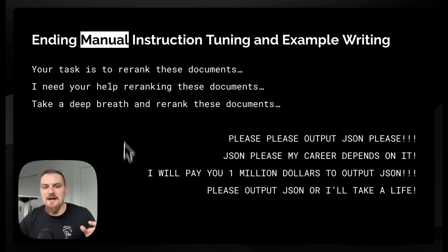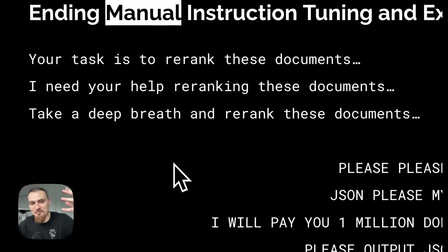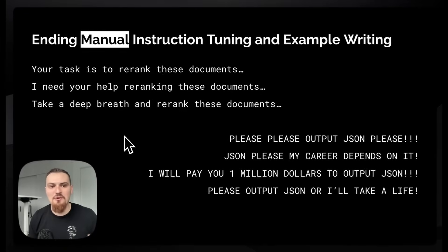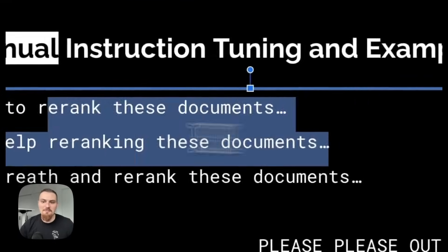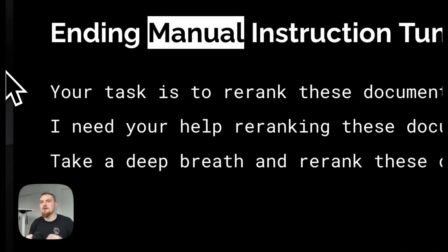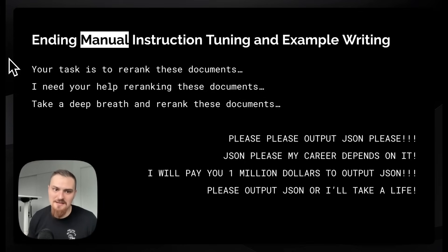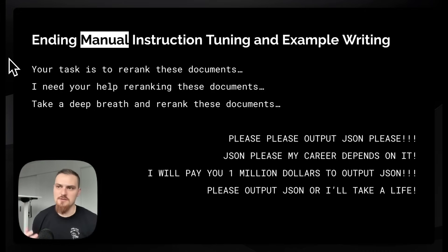We've had this thing where if you're trying to have a re-ranker agent, you might try different phrasings of the instruction: 'your task is to re-rank these documents' will perform differently than 'I need your help re-ranking these documents' or 'take a deep breath and re-rank these documents.' Further, which prompt performs best for which language model is different — maybe this one performs the best for GPT-4, but this one for Gemini Ultra, this one for Llama 3 when that comes out. This kind of ending the prompt tuning will help you keep up with the new language models. If you want to just plug in a new language model and see which prompt elicits the behavior, this automatic tuning framework is great.